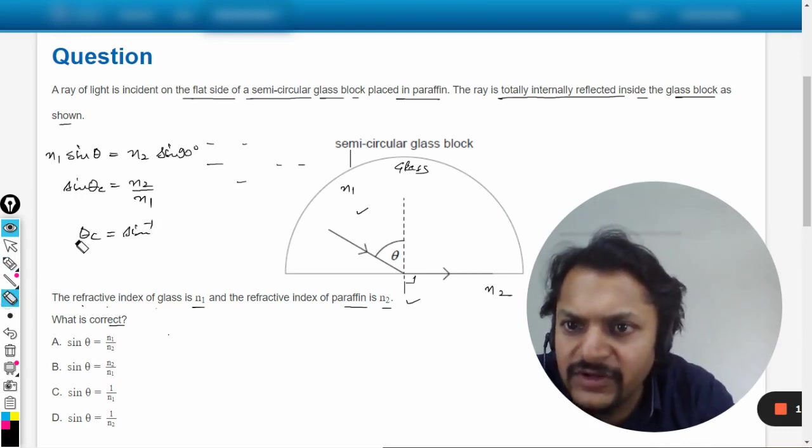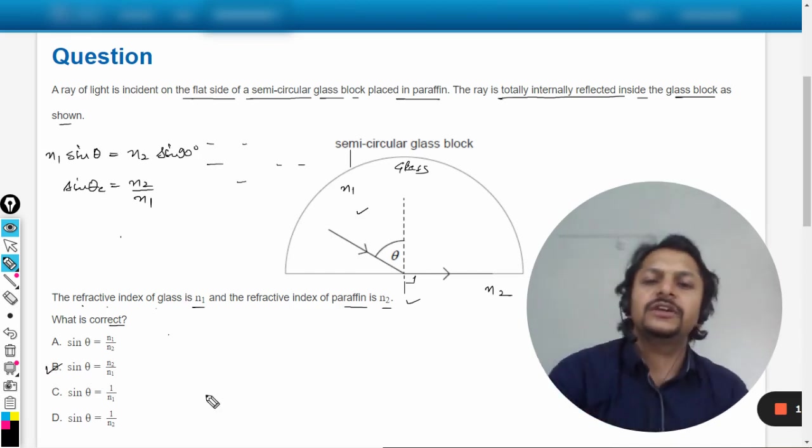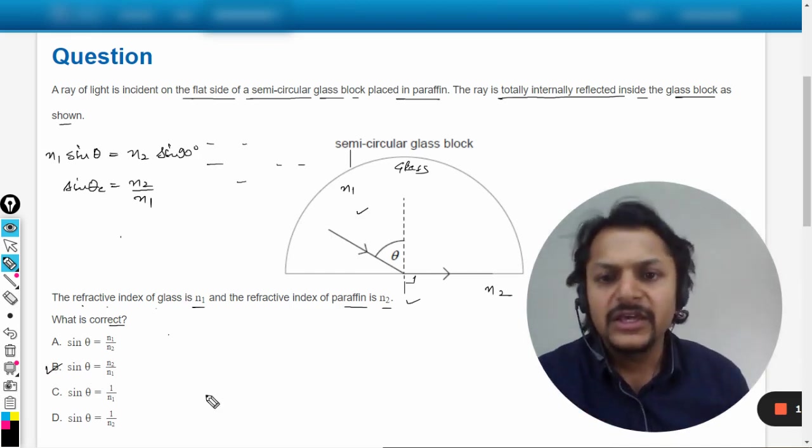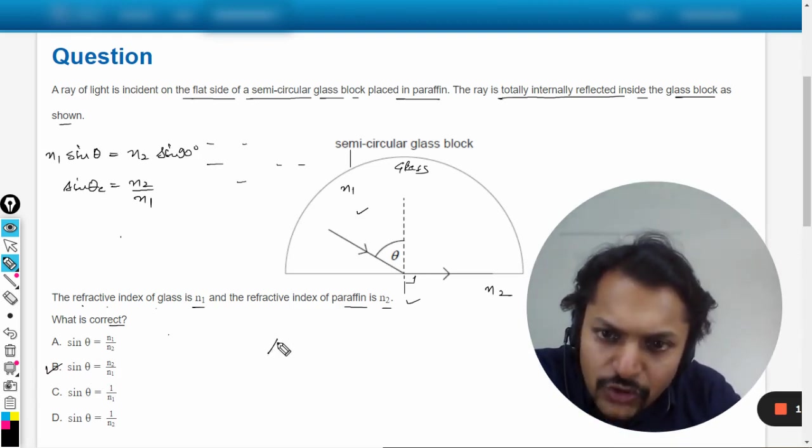Anyways, we don't need this. So sine theta critical is n2 by n1. So yes, the answer is coming out to be B. But if we directly want to go there, go for this.